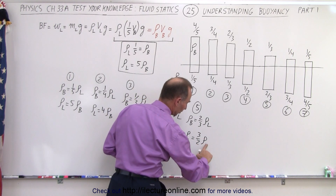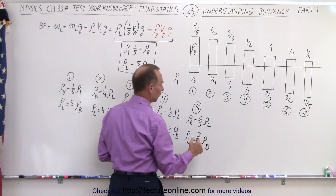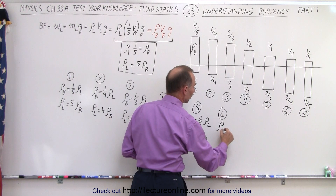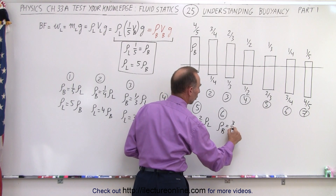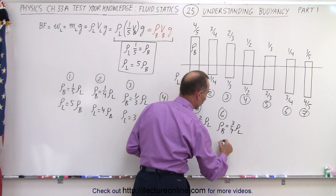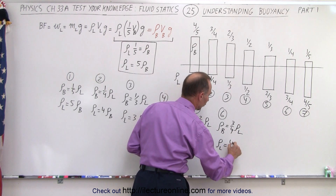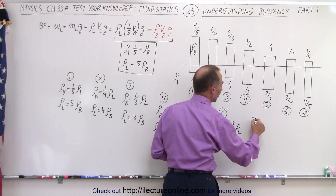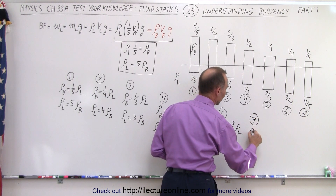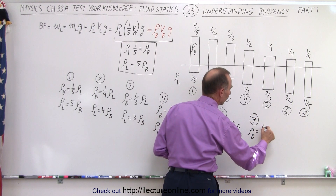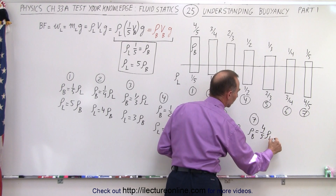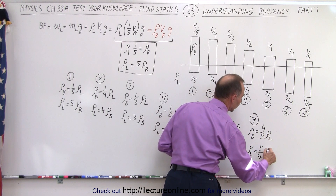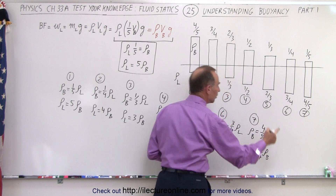That's a strange-looking B — let's try it again. There we go. In case number six, the density of the block is equal to three-quarters the density of the liquid, or the density of the liquid is equal to four-thirds the density of the block. And for the final case, case number seven, the density of the block is equal to four-fifths the density of the liquid, or the density of the liquid is equal to five-fourths the density of the block.